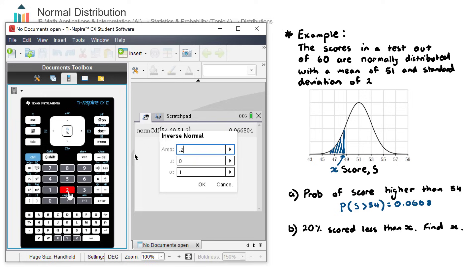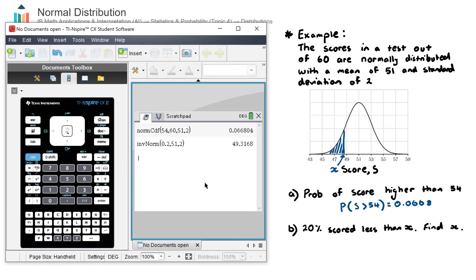Okay, the area is going to be 0.2. Now just be careful with this area here. And as you go and practice questions, you'll realize the calculator only reads the area from left to right. In our example here, that's okay because our area is to the left of this value. But if your area is to the right, then you'll need to do one subtract that area. But for our case here, we can just enter our area as 0.2. Our mean is 51. Our standard deviation is 2. We hit okay and we get a score of 49.3.